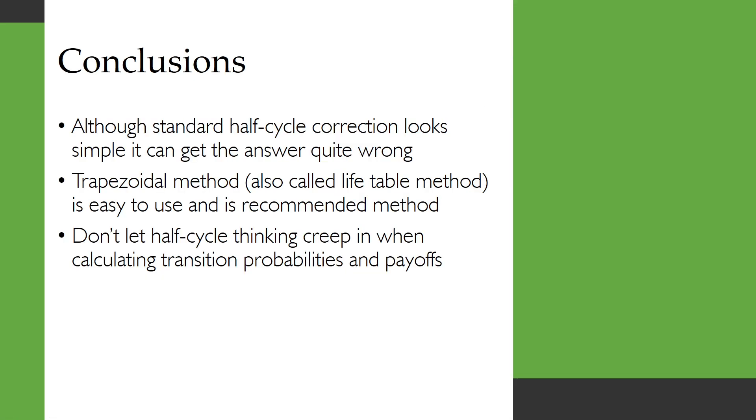So to conclude, although the standard half cycle correction looks simple it can get the answer quite wrong. The trapezoidal method which is also called the life table method is easy to use and is the recommended method and be careful not to let half cycle thinking creep in when you're calculating transition probabilities and payoffs, especially when you're using tunnel states.